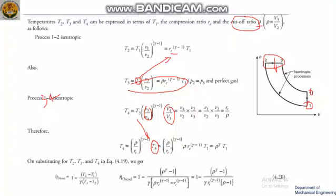The RC^(γ−1) terms cancel out, leaving T4 equals ρ^γ times T1. Now substituting T4, T3, and T2 into the efficiency expression, taking out T1 and canceling, you arrive at the final equation: Diesel efficiency equals 1 minus (1/RC^(γ−1)) times (ρ^γ minus 1) divided by (γ times (ρ minus 1)). One or two steps in between are left for you to solve.